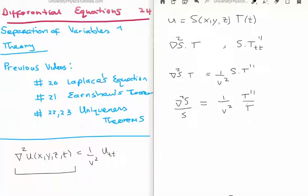Now here comes the subtle and very important part. What we have on the right-hand side is a function of time only, and on the left we have a function of space only, and they're equal. So if I change time I'm able to alter the spatial side, or if I move around in space I'm able to alter the temporal side — and clearly that makes no sense. So the only way this is possible is if both of these functions are a constant. We call that constant k.